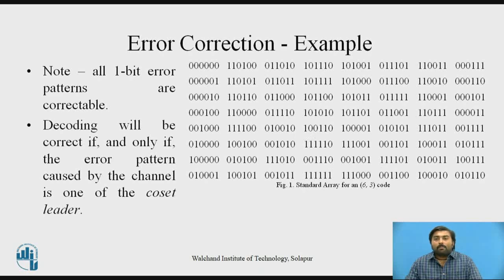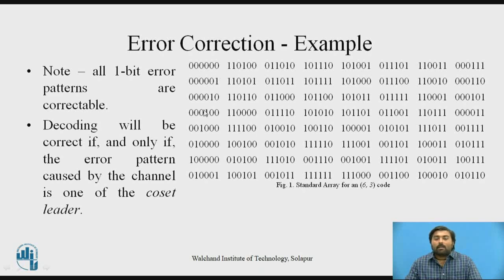Decoding will be correct if and only if the error pattern caused by the channel is one of the coset leaders. If the error in the received vector is a single-bit error, it can be corrected using the corresponding error pattern, which is the coset leader of that coset. If the error pattern caused by the channel is a valid coset leader, then decoding will be correct.